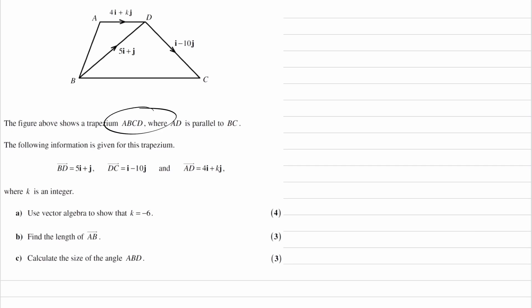We're given a trapezium ABCD, and then we're told that AD is parallel to BC. So if AD is parallel to BC, what that means is if two vectors are parallel, they are scalar multiples of one another. So I can say that AD is equal to lambda BC. And we'll get back to that later.